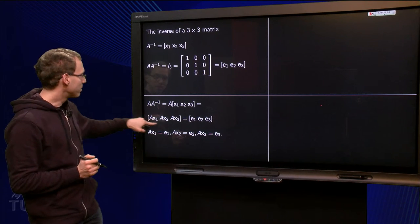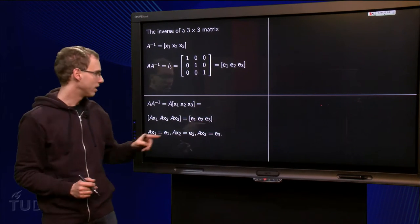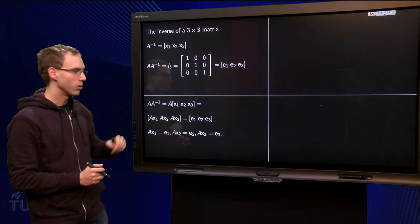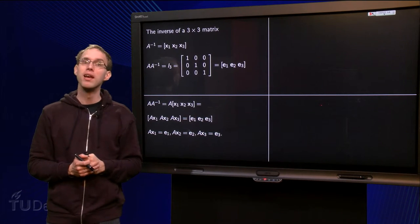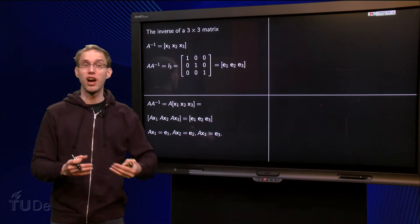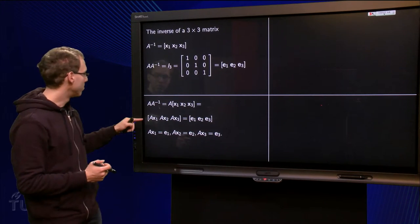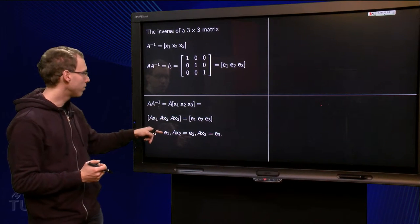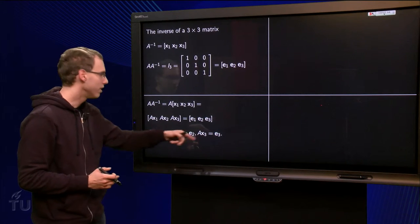Now this A times A inverse has to be equal to the matrix consisting of e1, e2 and e3. So this matrix on the left here has to be equal to the matrix on the right over here. But two matrices are only exactly equal if all columns are equal. So that means that A times x1 has to be e1, A times x2 has to be e2, and A times x3 has to be e3.